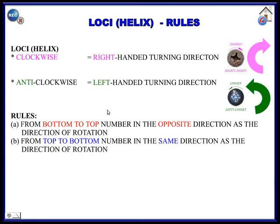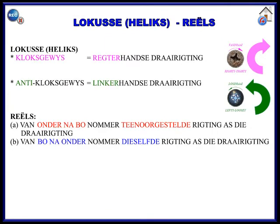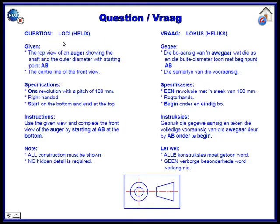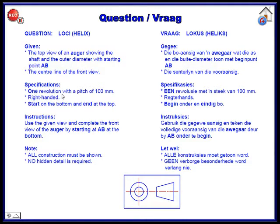That information regarding the left and right handers, which we will discuss later in your drawing. There is a top view of an auger showing the shaft on the inside and the outer diameter with starting point AB. The center line of the front view is also given to you. One revolution, one turn, one pitch.